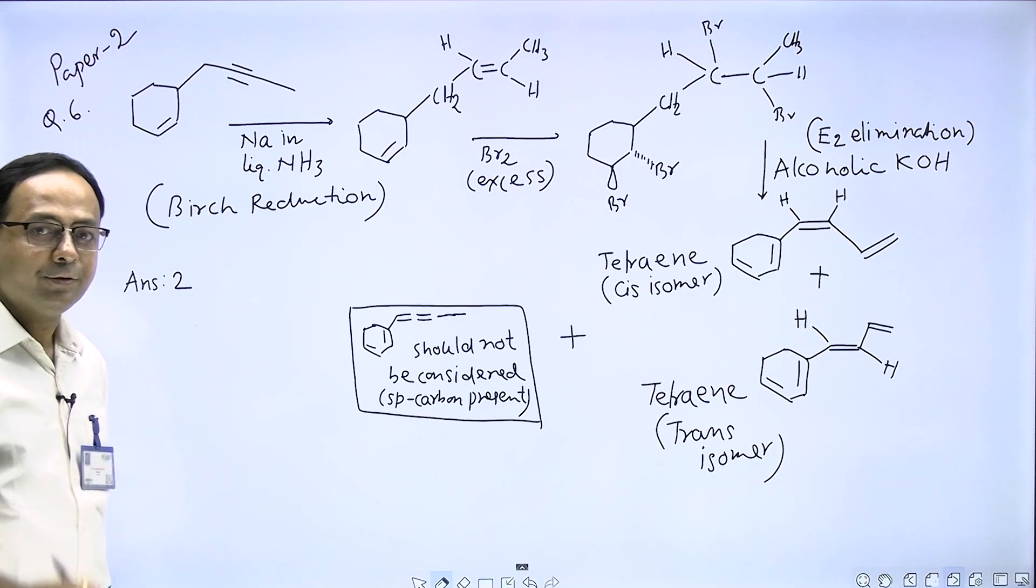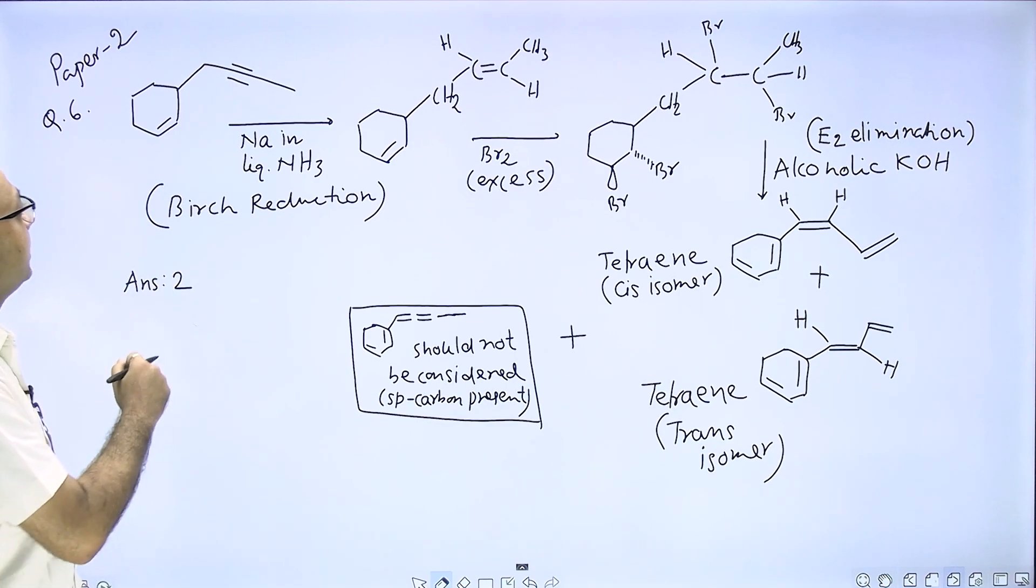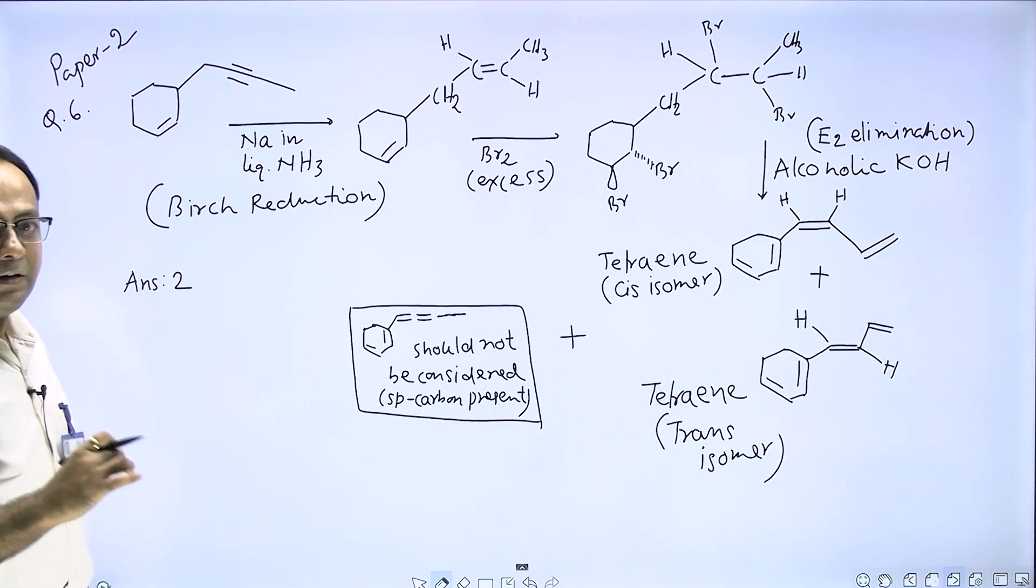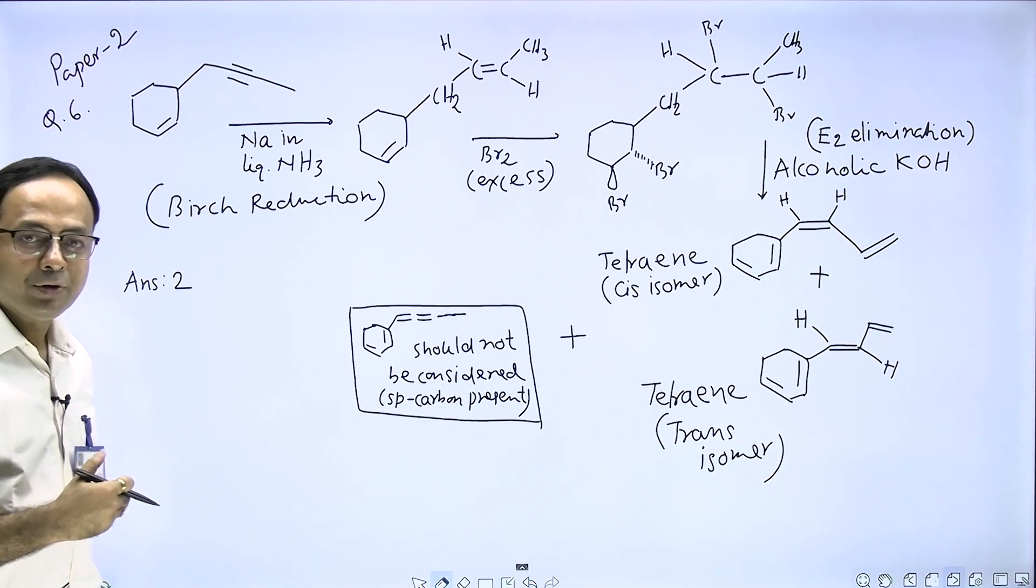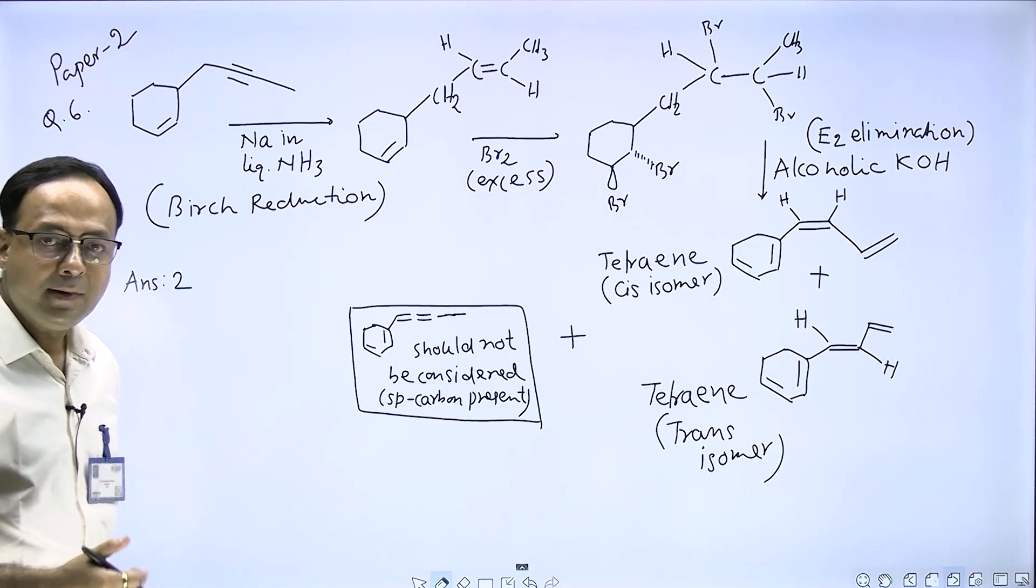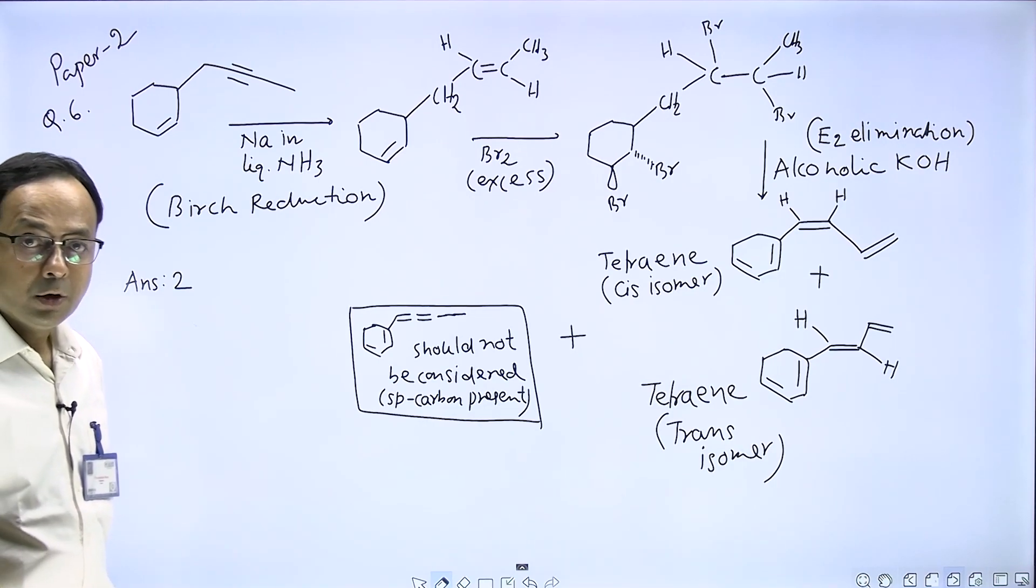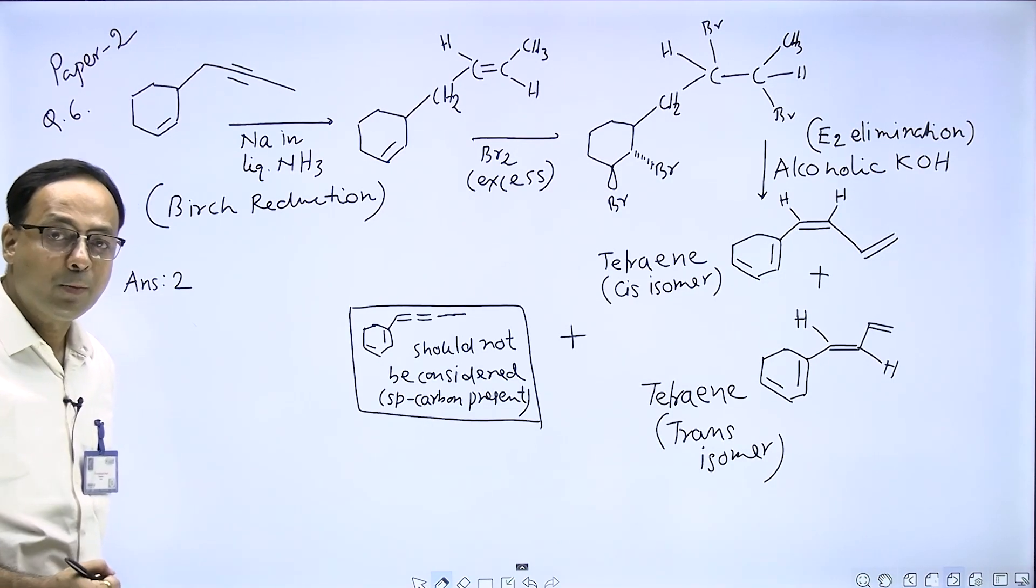This question is based on a hydrocarbon. Here one compound is given where both double bond and triple bond are present. This compound reacts with sodium in liquid ammonia. We know when a triple bond reacts with sodium in liquid ammonia, it gives a trans isomer, trans alkene. That reaction is called Birch reduction.